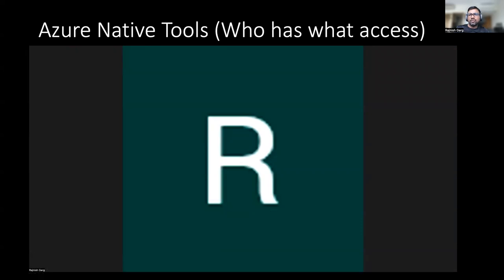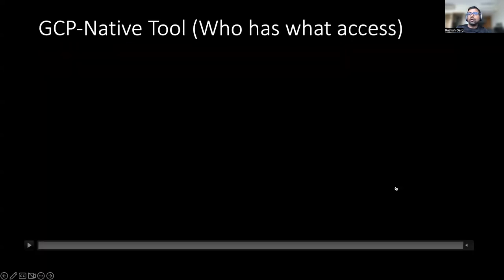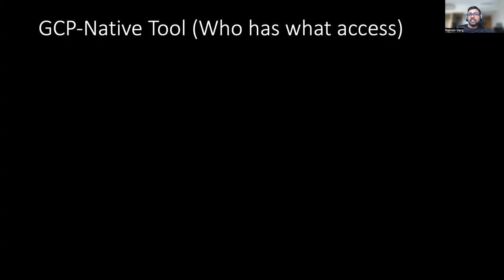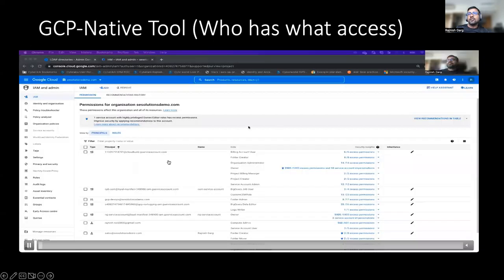This is a little bit about Azure. If you see, Azure has done a better job as compared to AWS. Now let's look into GCP. GCP has a tool called Policy Analyzer, which can really help us to understand holistically what permissions have been assigned at what level within GCP.